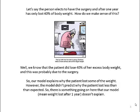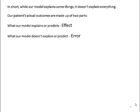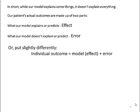So there's something going on here the model doesn't explain. In short, while our model explains some things, it doesn't explain everything. Our patient's actual outcomes are made up of two parts: the model explains or predicts the effect, and what our model doesn't explain or predict is error. Put differently, individual outcome is model plus error.